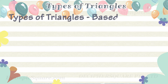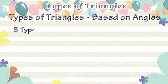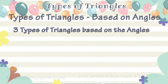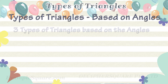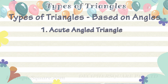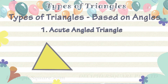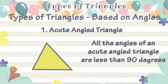What are the different types of triangles based on the angles of the triangles? There are three types of triangles based on the interior angles. A triangle in which all the interior angles are smaller than 90 degrees is called an acute triangle or an acute angled triangle.